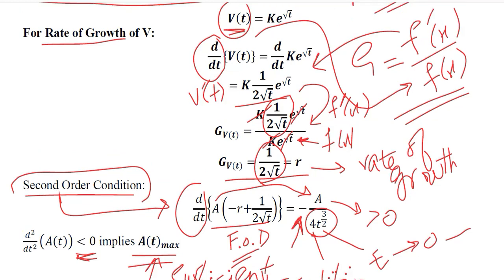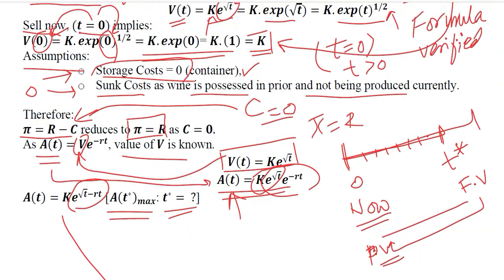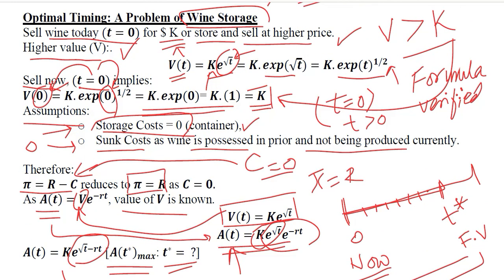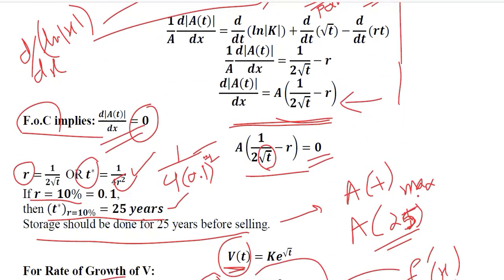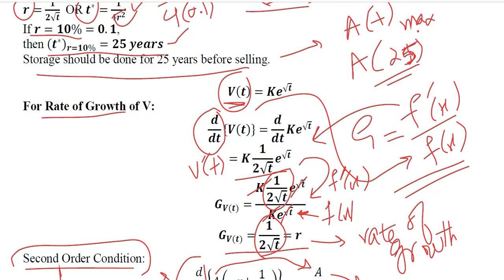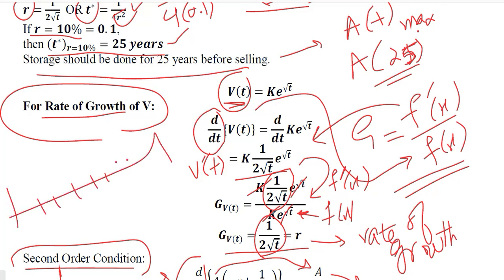This is how we can maximize the value of wine by identifying the certain time period at which its value is maximum. In this lecture, we learned about the concept of present value and applied the first and second order conditions to find the maximized value of wine. We also applied the rate of growth formula to find how wine's value increases year by year, reaching its maximum at 25 years. Yearly growth is also calculated in this process.